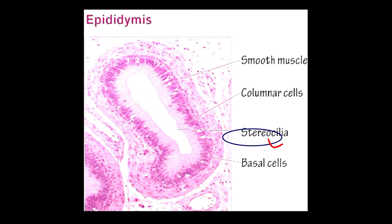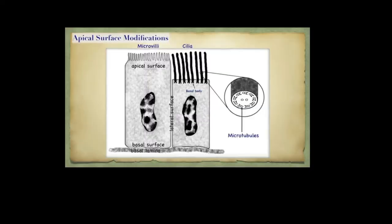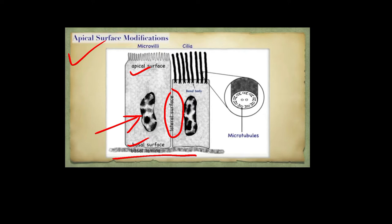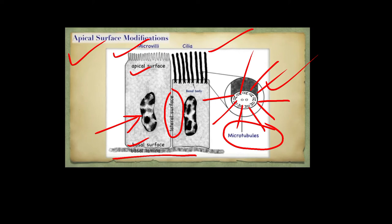Another photograph shows stereocilia along with columnar cells, smooth muscles, and basal cells in the wall. The basal lamina, basal surface, apical surface, lateral surface, and nucleus of the cell can all be identified. An animated image shows the difference between microvilli and cilia as apical surface modifications. The cross-section of cilia shows microtubules in a 9+2 arrangement — nine doublets arranged around two central microtubules.